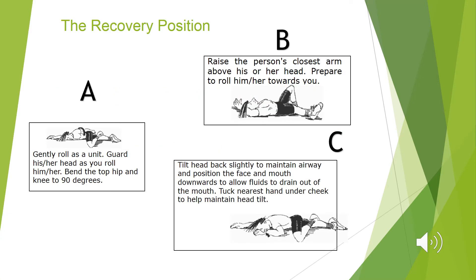If someone is extremely intoxicated, it is important that you place them in the recovery position. The first step is to raise the person's closest arm above his or her head and prepare to roll them towards you.